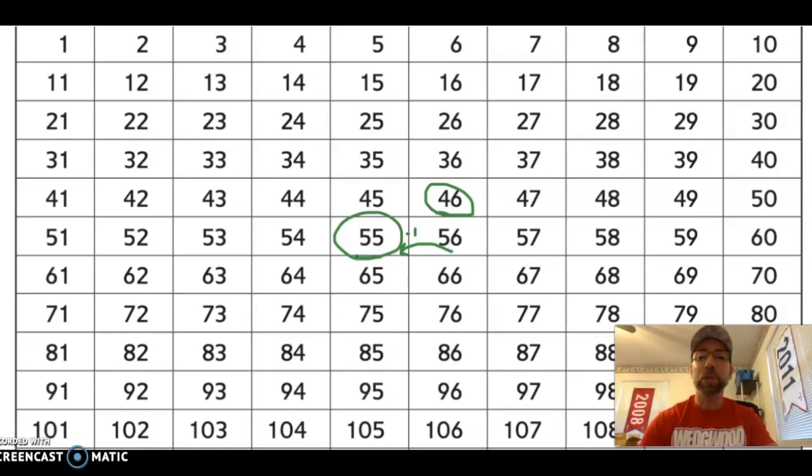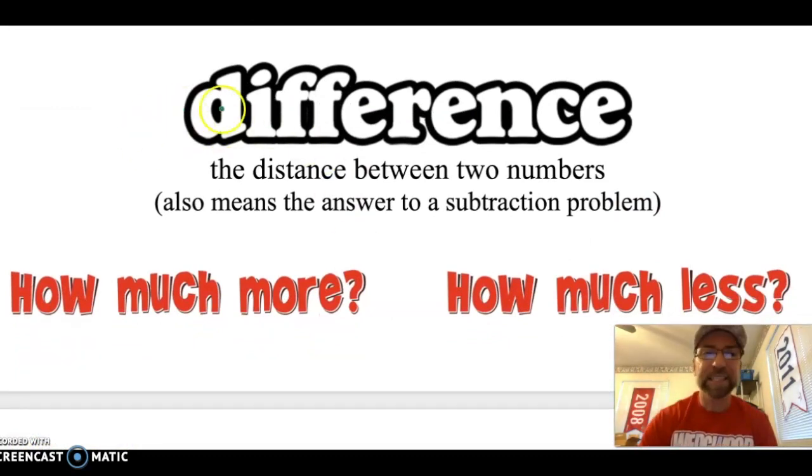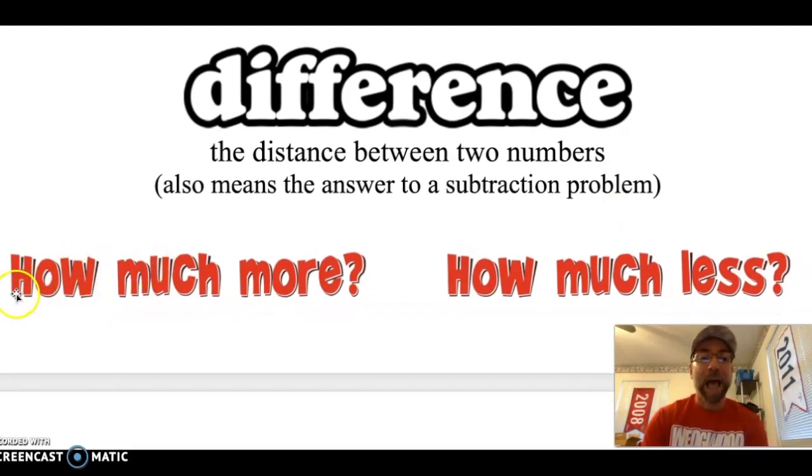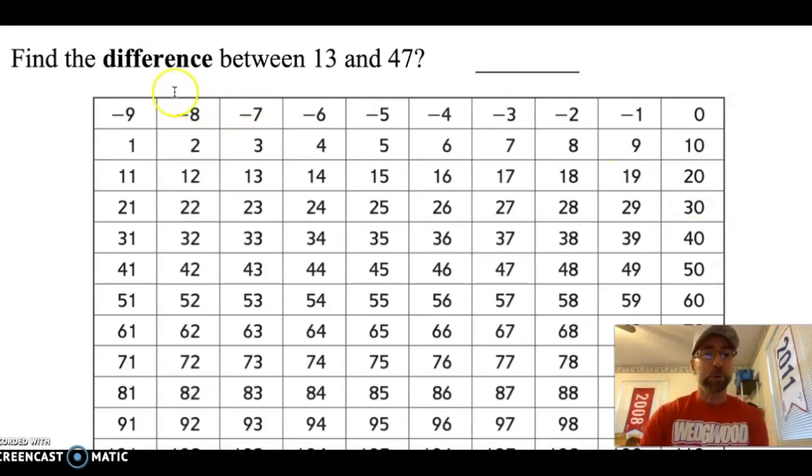So that was a quick review on how to use our number grids. Today, we're going to be working with our number grids to learn about something called the difference. Can you say that word with me? Difference. You may have heard that word before. Difference is the distance between two numbers. It also means the subtraction, the answer to a subtraction problem. So you probably have heard the word difference with subtraction. Find the difference. It's just the distance between two numbers. When we talk about difference, you will also hear the phrases how much more and how much less. That also means to find the difference, the distance between two numbers. Let's try on our number grids.